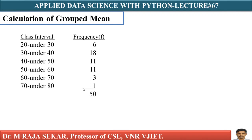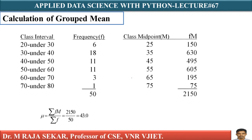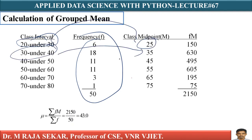Calculation of grouped data. There is an interval between 20 and 30, 30 and 40, 40 and 50, 50 and 60, 60 and 70, 70 and 80. Here you have frequencies. You must identify middle points. 20 plus 30, 50 by 2 means it's 25. 30 plus 40, 70 by 2 means 35. 40 plus 50, 90 by 2 means 45. In a similar manner, 70 plus 80 by 2 means 75. These are the middle points.